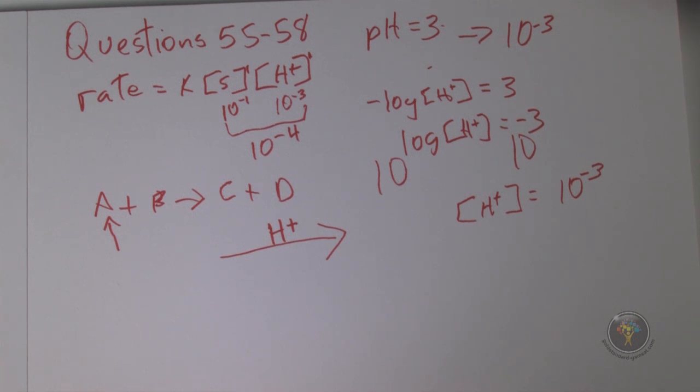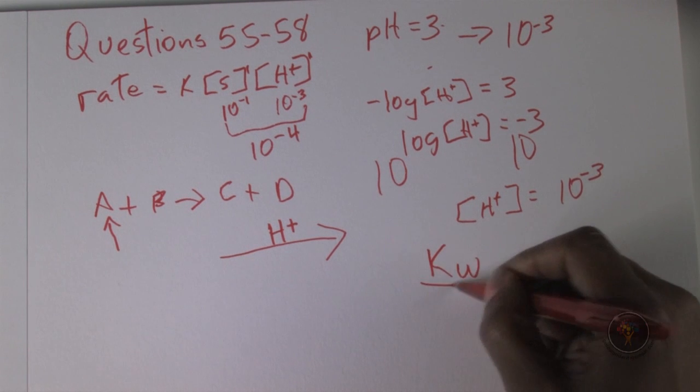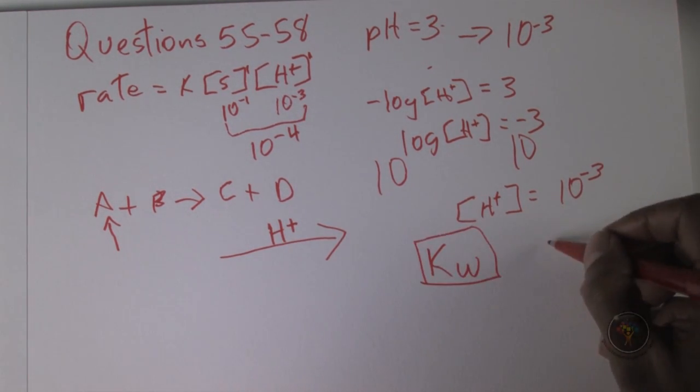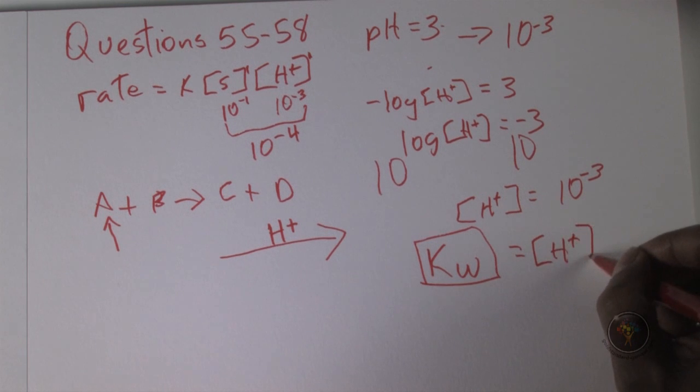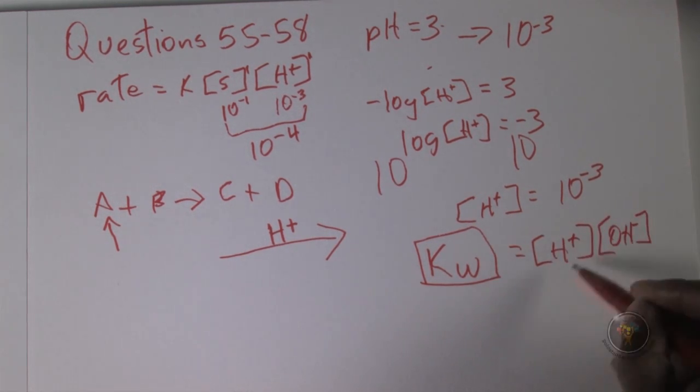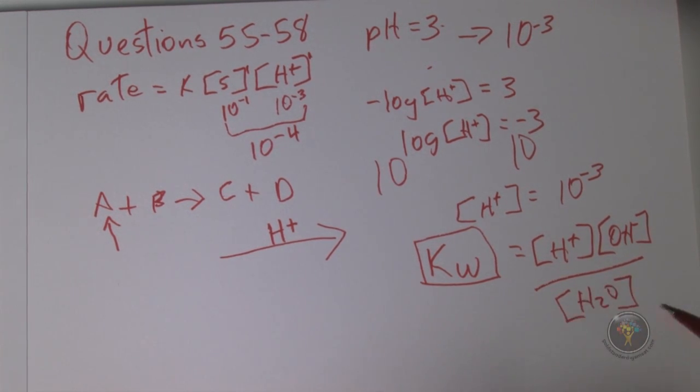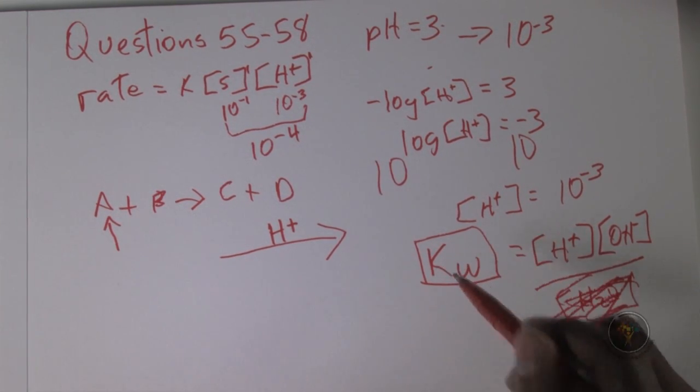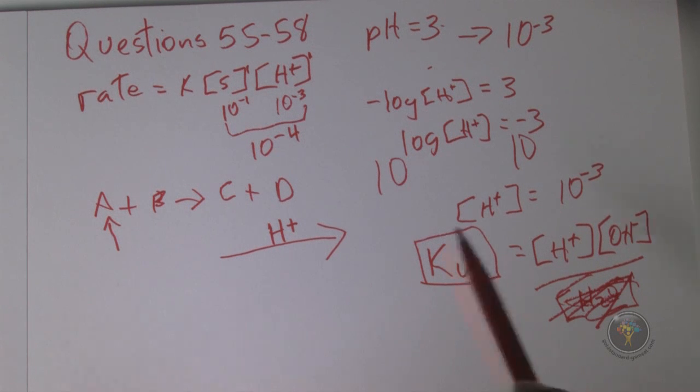This is no surprise. This is the reason why for Kw it equals the concentration of hydrogen times the concentration of OH minus, but you do not divide it by the reactant which is water. You don't because the water level is too high, so it's incorporated into the constant. Similarly, when the water levels are so high that they are basically unchanged from one side to another, it is not incorporated into the constant.